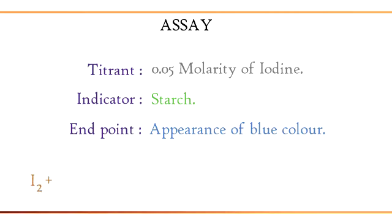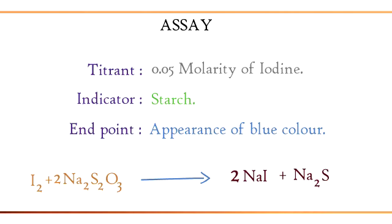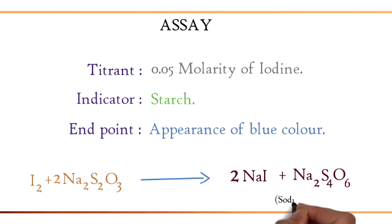The assay equation is I2 + 2Na2S2O3 → 2NaI + Na2S4O6. Sodium thiosulfate reacts with iodine to give sodium iodide and sodium tetrathionate.